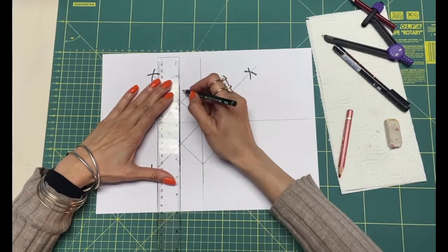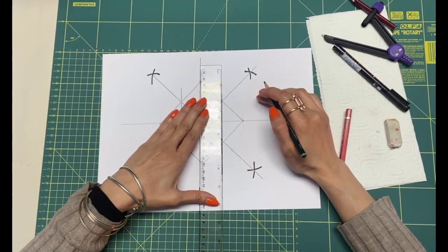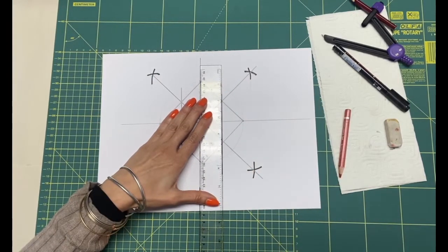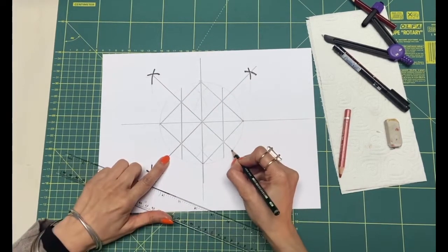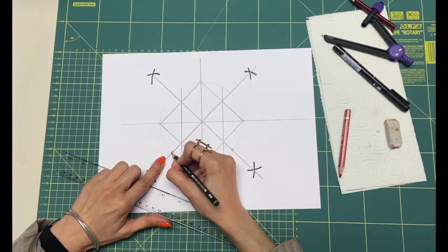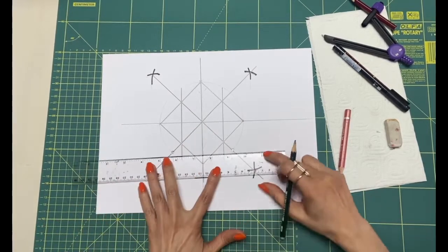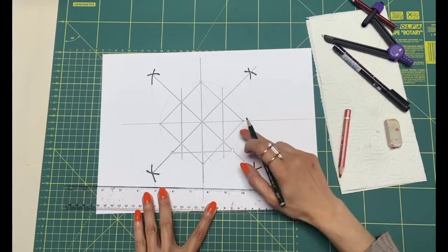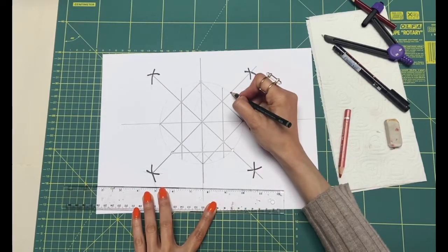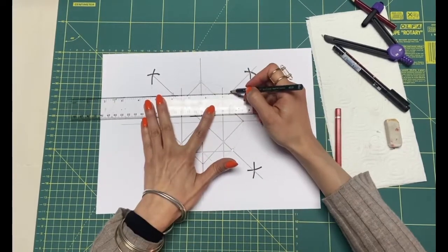Look at the points I attach to each other. I'm drawing two squares inside each other. One of them is rotated 45 degrees to the other one.